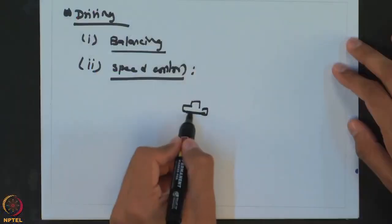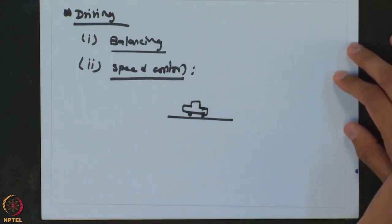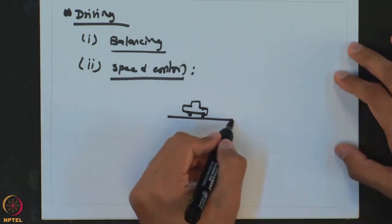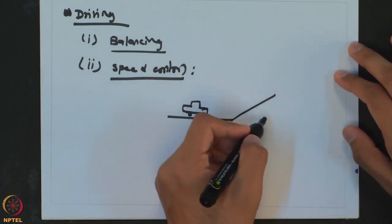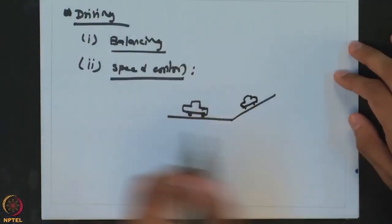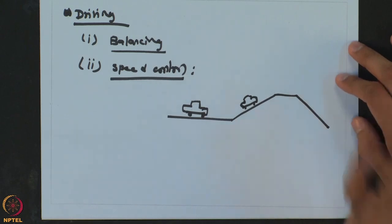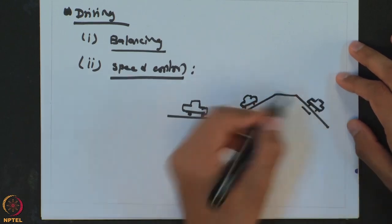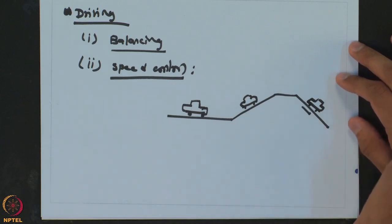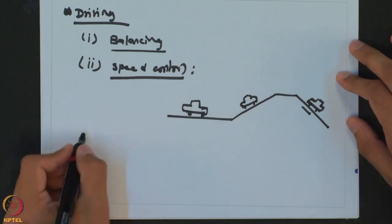Another use of feedback control is speed control. If you are going uphill, you have to provide more energy to your car to maintain the same speed. Let's say you are going on a flat road with a fixed accelerator position and then hit an uphill part — the same amount of acceleration will not give you the same speed, so you press the accelerator more. Going downhill, you release the accelerator because gravity provides additional force. By changing the accelerator, you try to maintain speed within your desired value — this is also feedback control.